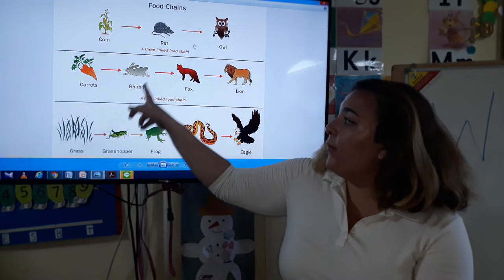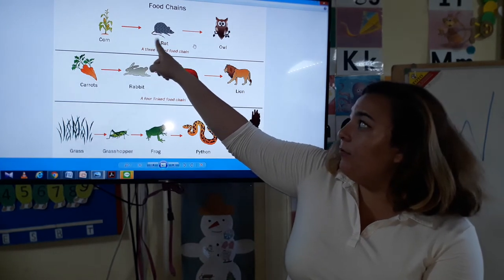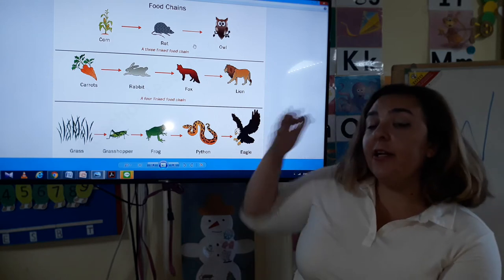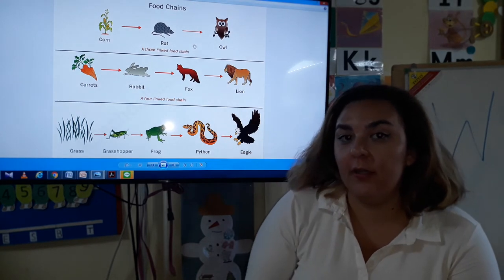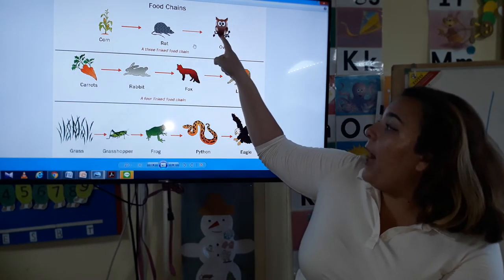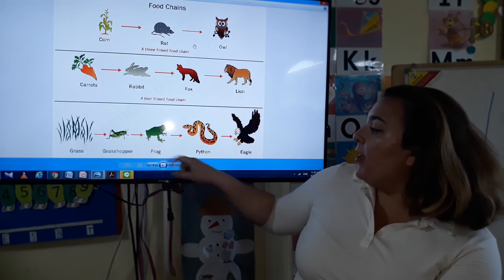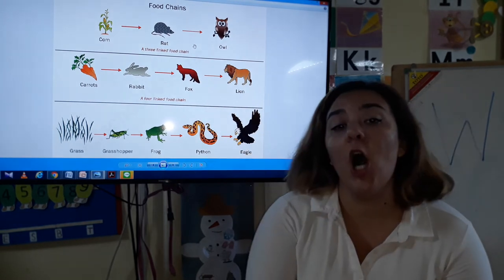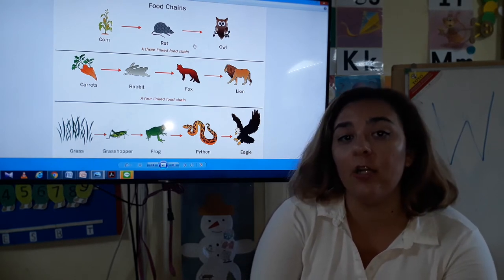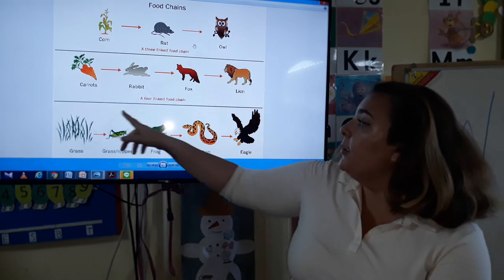Then you have carnivores. Think of the word 'carne' - meat. An owl, a fox, a lion, frog, python, and eagle - they are all carnivores because they eat other animals. They only eat other animals. Can you repeat: carnivores?